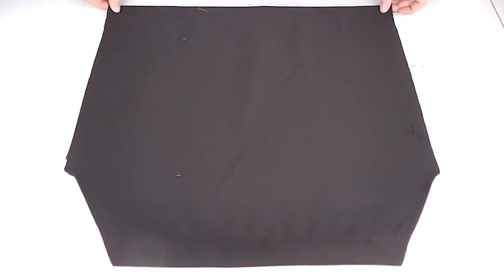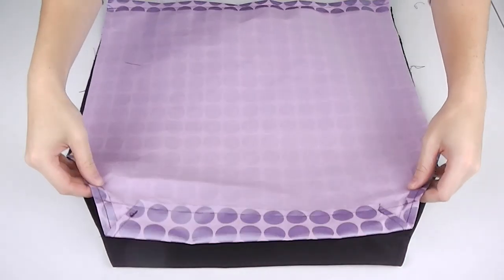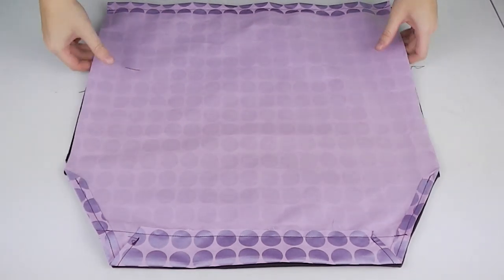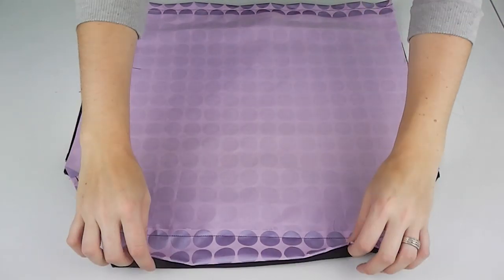With both sides of the dress now complete lay one on top of the other and pin into place. Being sure that the back side is front side up and the front piece of the dress is good side down.